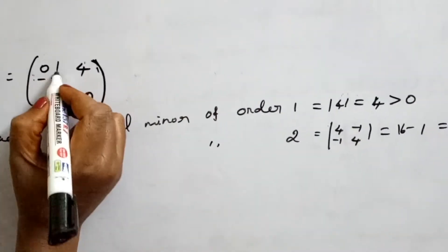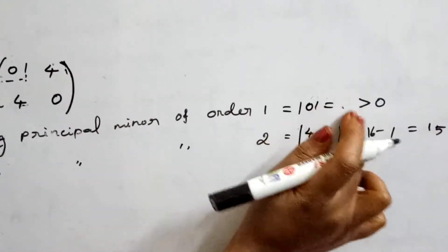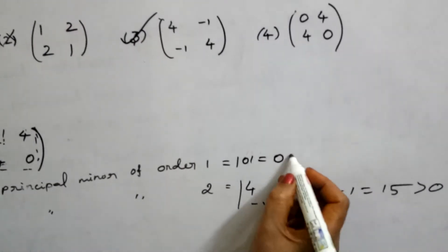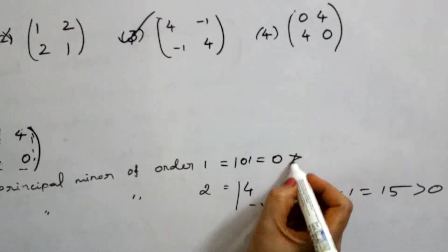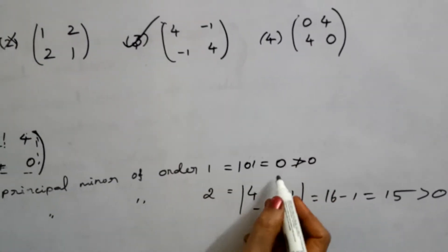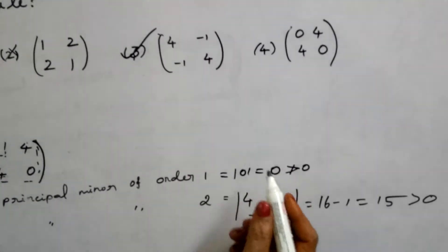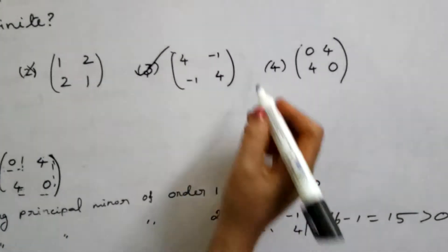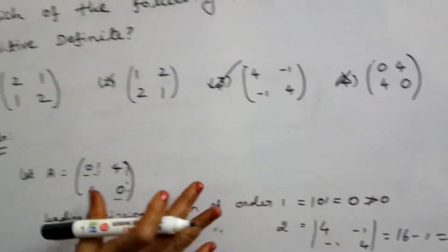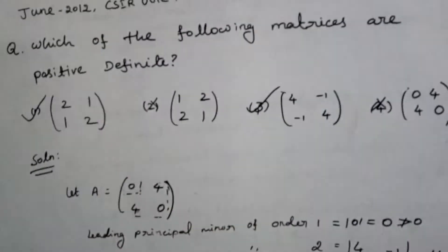Checking further: if a value is 0, it is not greater than 0. Since one value is not greater than 0, this matrix is not a positive definite matrix. Now we move to the next option.